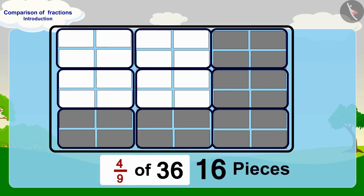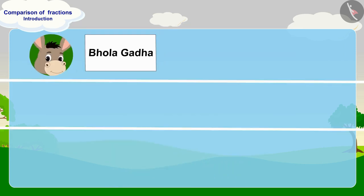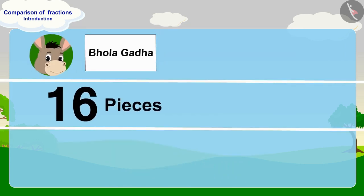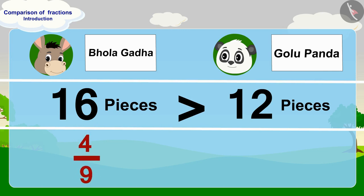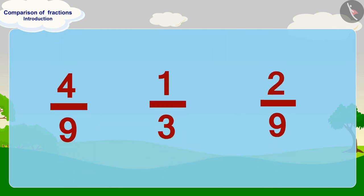Four ninth of 36 is 16. Bholla has written his name on 16 pieces of paper and Golu has written his name on 12. Therefore, Bholla has written his name on more pieces than Golu. We can also see it this way: the fraction four ninth is larger than one third.